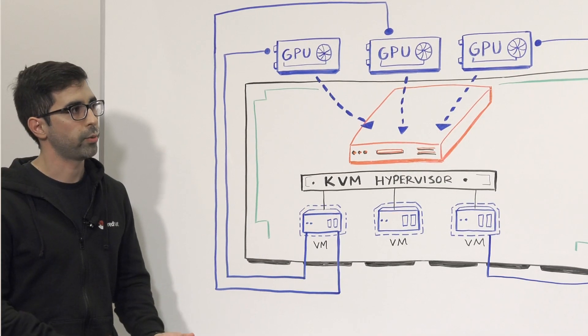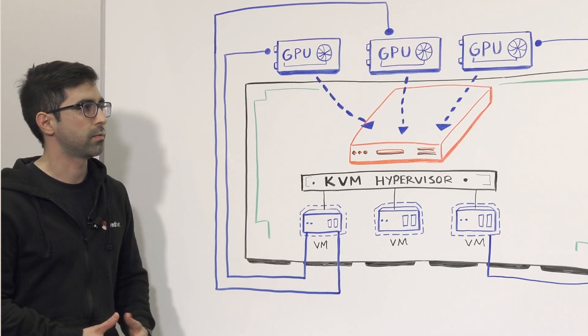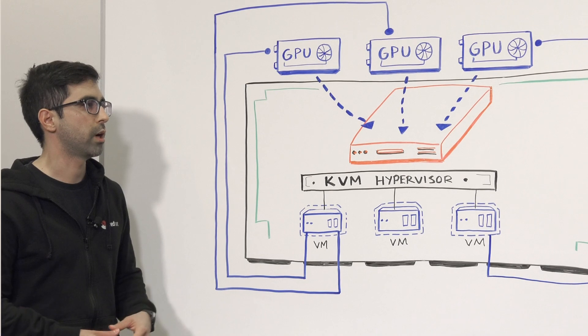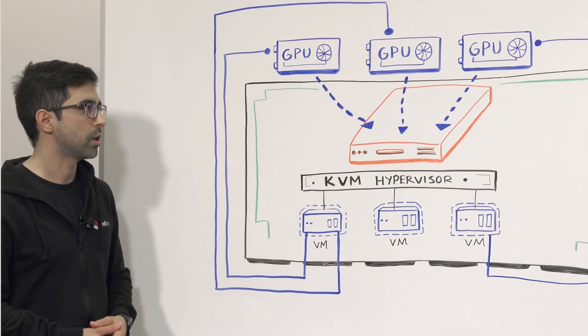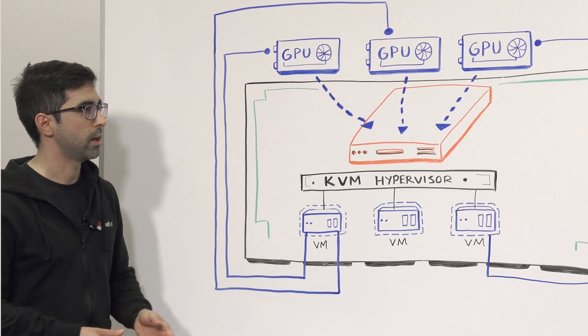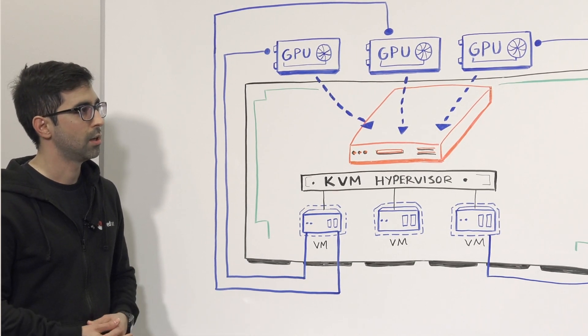Last time we talked, we went over the basics of OpenStack and the different projects that it's comprised of — projects like Nova, Neutron, Cinder, Glance, and some others.